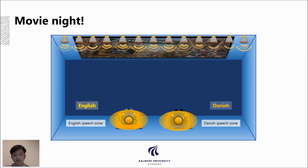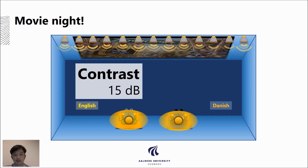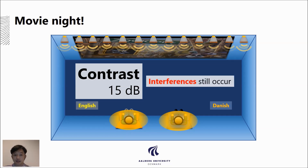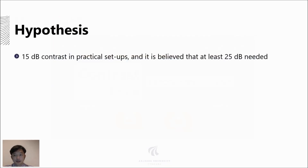Using state-of-the-art methods, we can obtain around 15 dB of contrast between two zones, which means interferences still occur. It is believed that we need at least 25 dB of contrast.